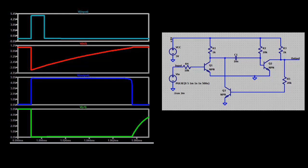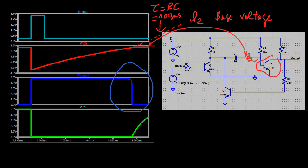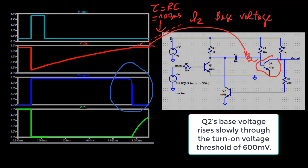The second problem is for the output pulse to turn off take somewhat slowly. That happens because Q2's base voltage with its unhurriedly 100 microseconds RC time constant rises relatively slowly through the turn on voltage threshold of approximately 0.6 volts.